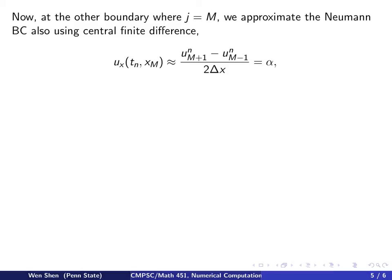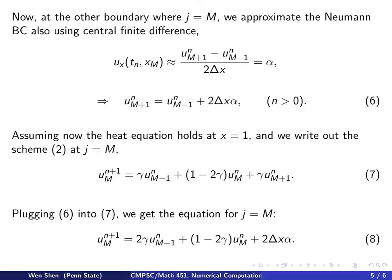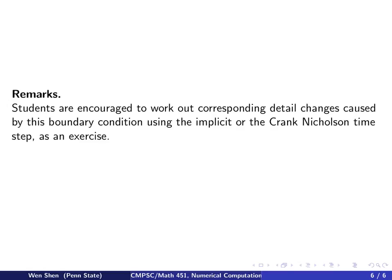Finally, the last point to deal with is the boundary point where j equals to m, and we now approximate Neumann boundary condition also using central finite difference. So u at m plus 1 minus u at m minus 1 divided by 2 delta x, and the boundary condition says it shall equal to alpha. So you can solve this equation for u m plus 1 and write it out. This is what we have. So multiply both sides by 2 delta x, and move this term to the right, and then we have this expression. And this holds for all n bigger than 0.